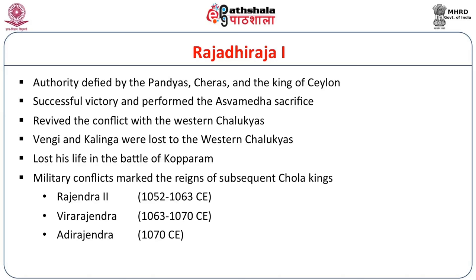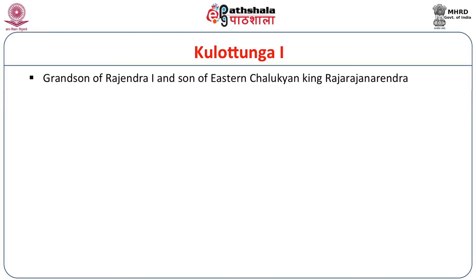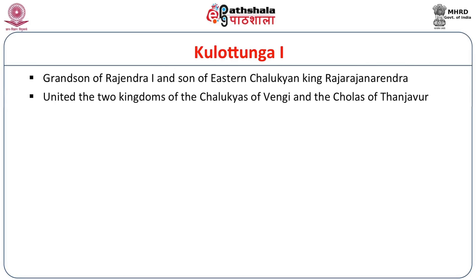After the death of Rajaraja II, military conflicts continued and marked the reigns of subsequent Chola kings. Rajaraja II, Vira Rajendra, and Adirajendra followed up to 1070 AD, but the Chola power started to decline. The Chola power once again regained under Kulottunga I. This Kulottunga I was the grandson of Rajendra I and son of the Eastern Chalukyan king Rajaraja Narendra. He was responsible for uniting the two kingdoms of the Chalukyas of Vengi and the Cholas of Tanjabur. Thus, he became the founder of a new line of dynasty, that is, the Chalukya-Chola dynasty.